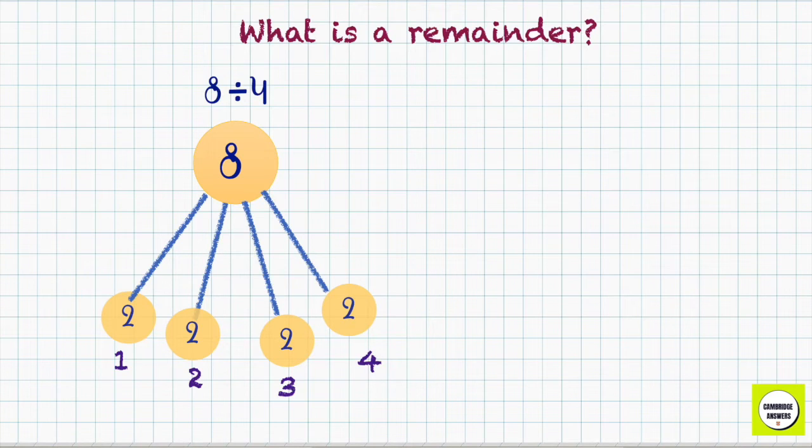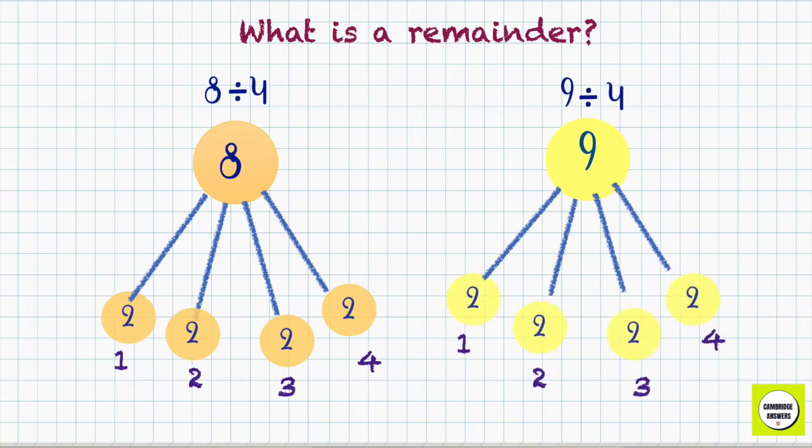Now let's take 9 divided by 4. 9 is not a multiple of 4 and therefore cannot be divided equally into 4 groups without a remainder. The remainder over here is 1.